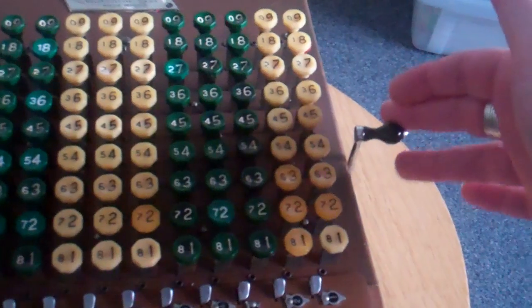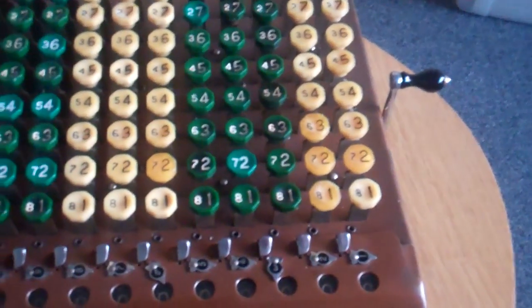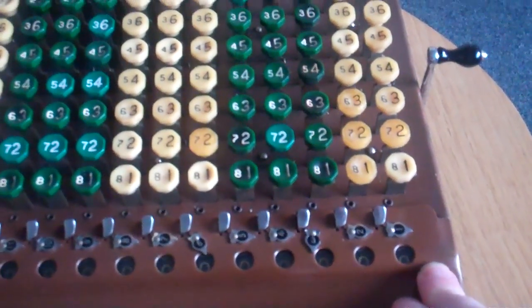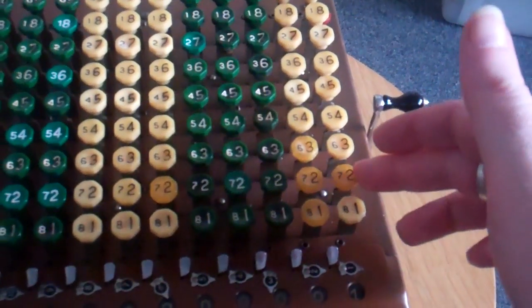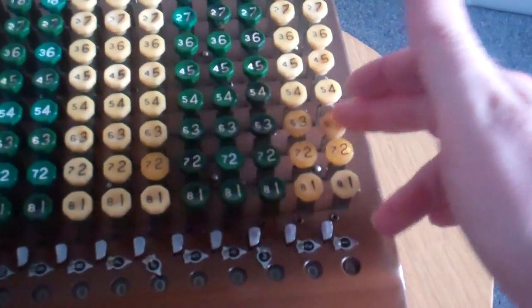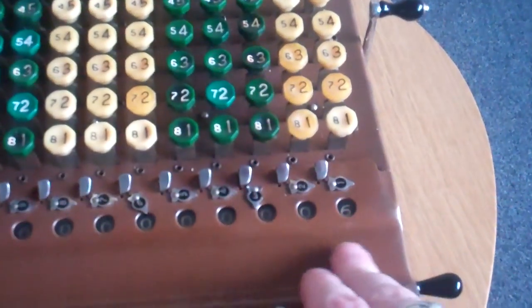Before you start you always have to zero the register, so it all says zeros here. Addition is very easy, you just type in all the numbers you want to add. So adding one, two and three, you get six.